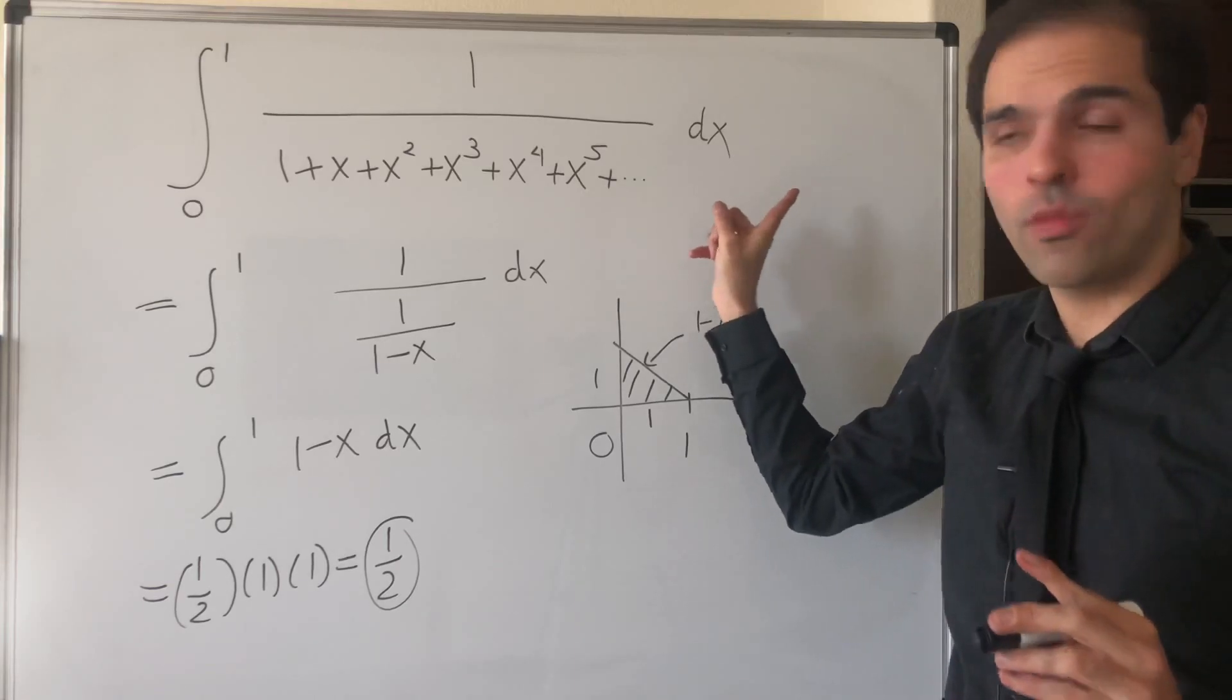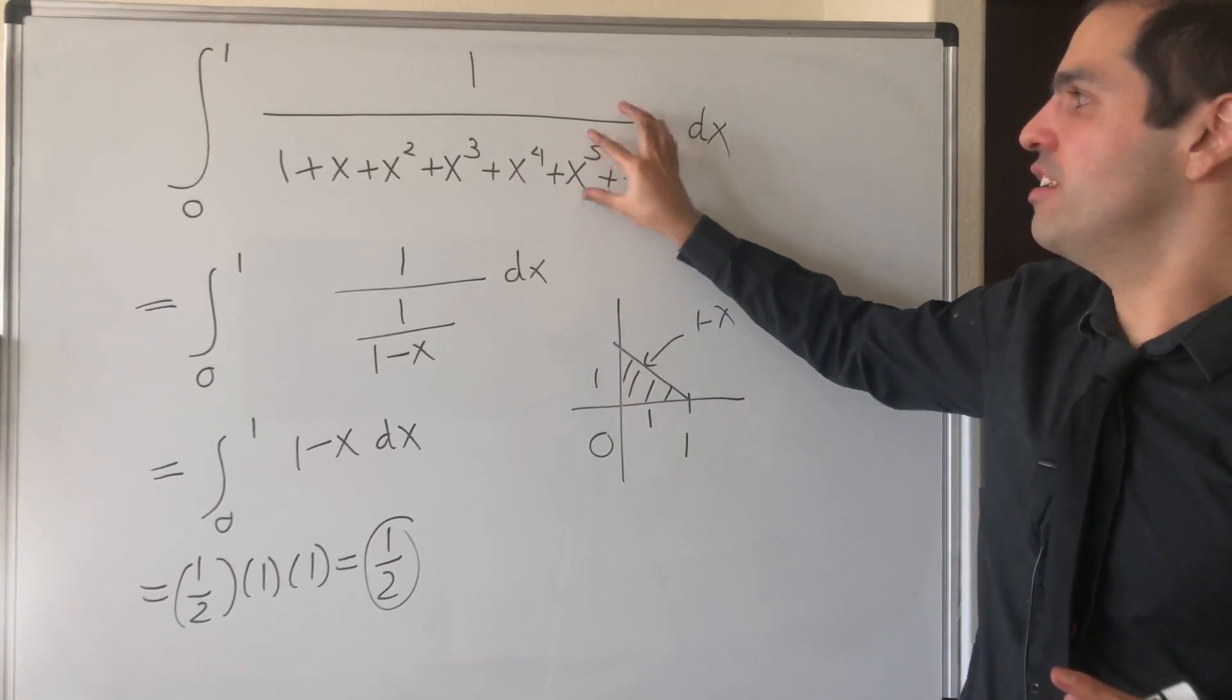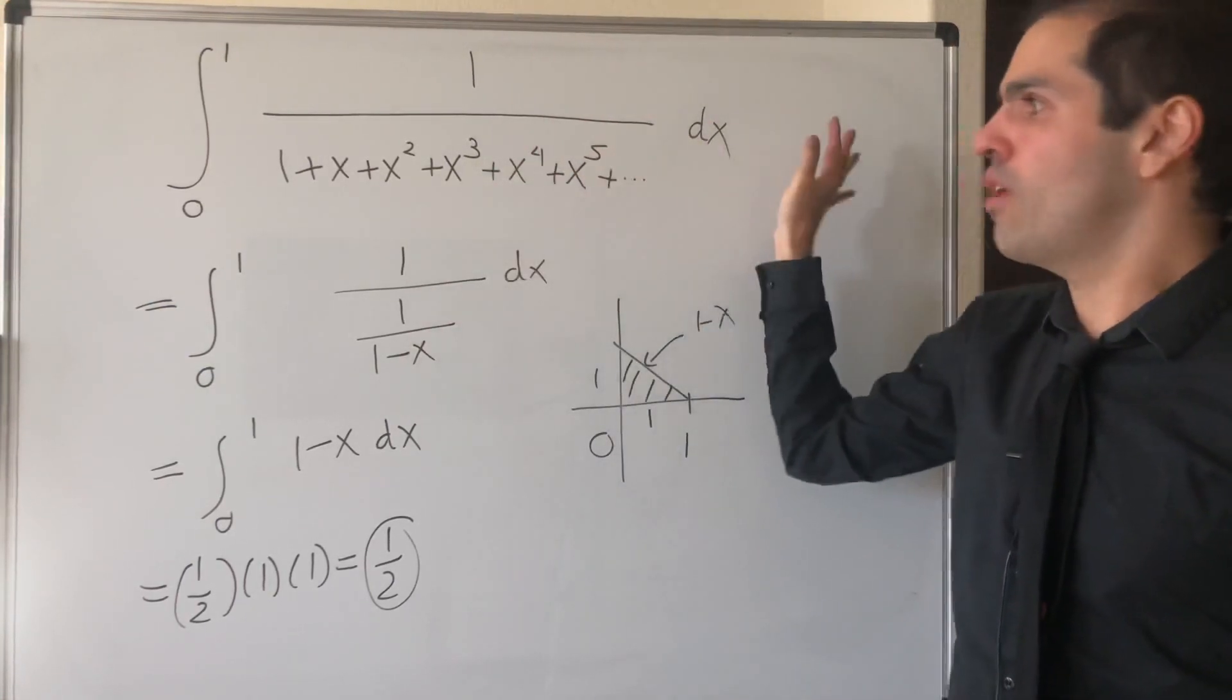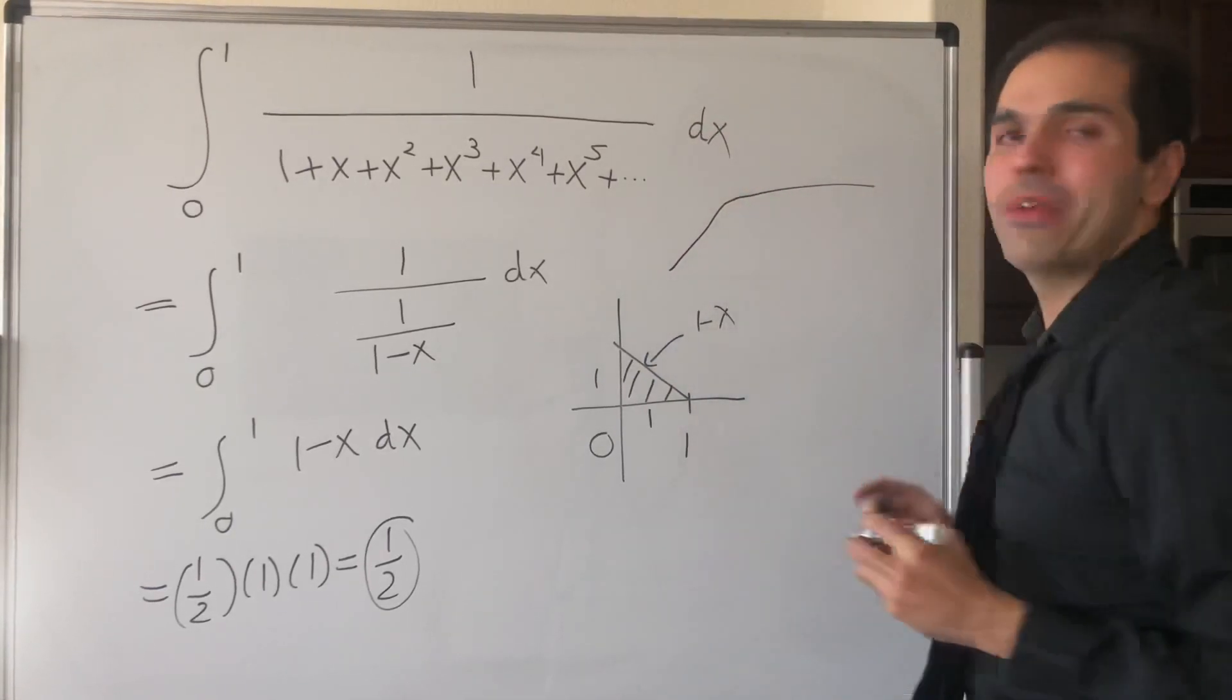If x is bigger than 1, then at every point, this is actually infinity, the denominator. So 1 over infinity is 0. So after a while, the integral just becomes stable, maybe like that.